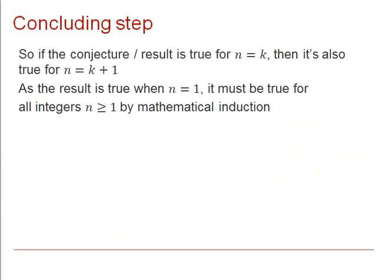All we need to do now is our step 3 or concluding step. This is a statement that will be made again and again when you are using mathematical proof by induction. It goes something like this: if the conjecture or result is true for n equals k then it's also true for n equals k plus 1. As the result is true when n equals 1, which you remember we proved in step 1, it must be true for all integers n greater or equal to 1 by mathematical induction.